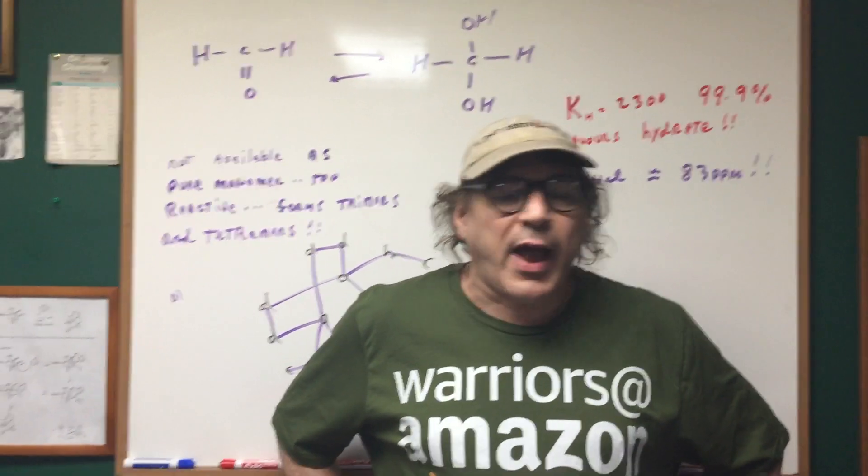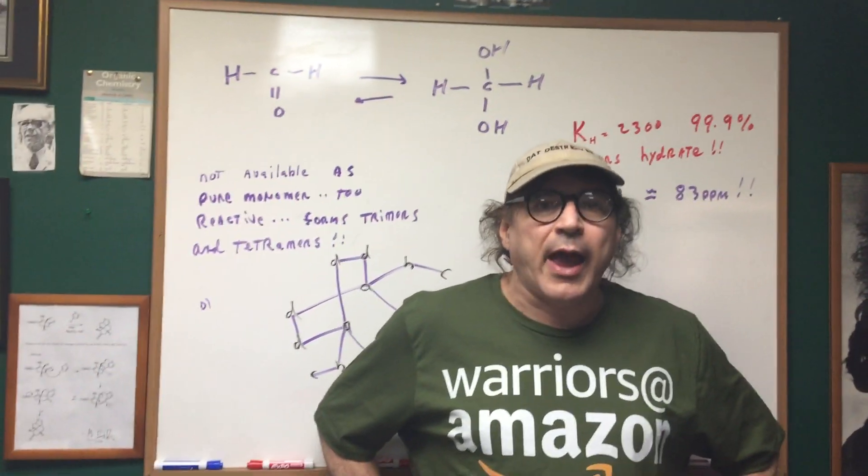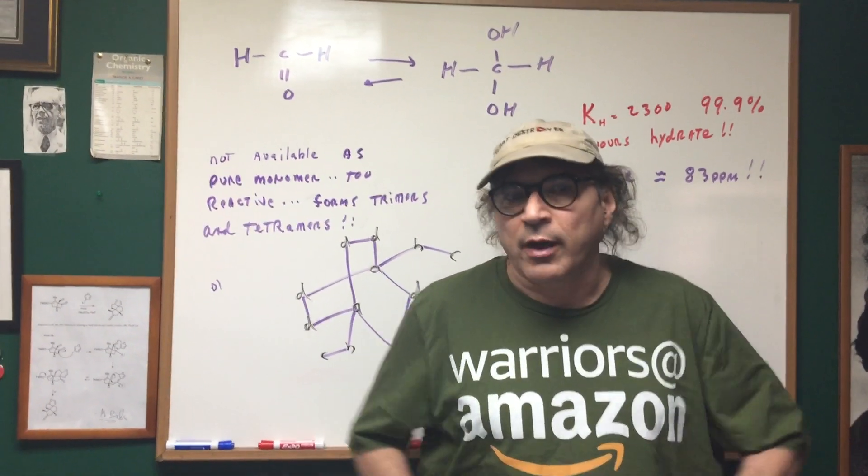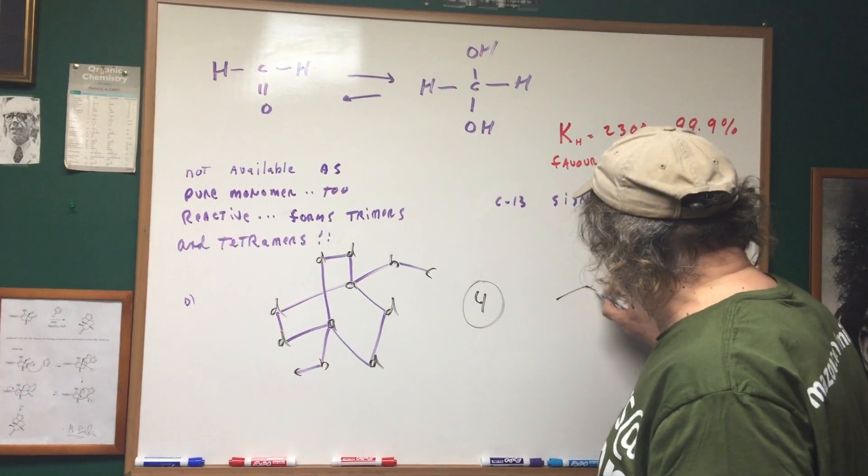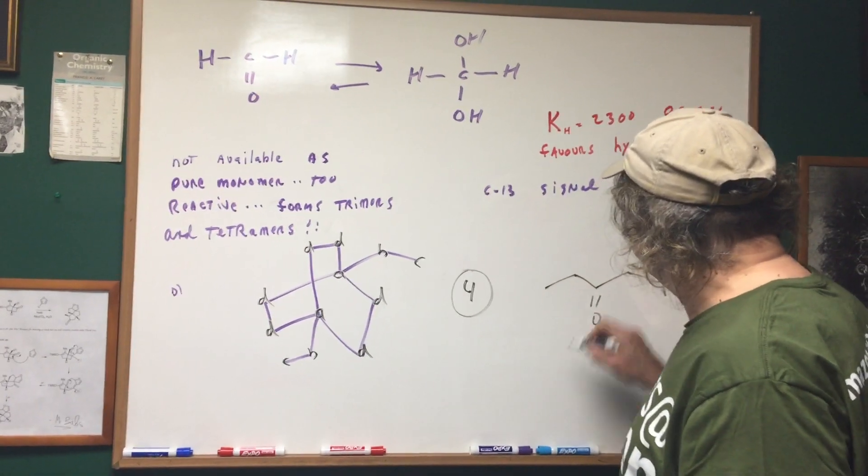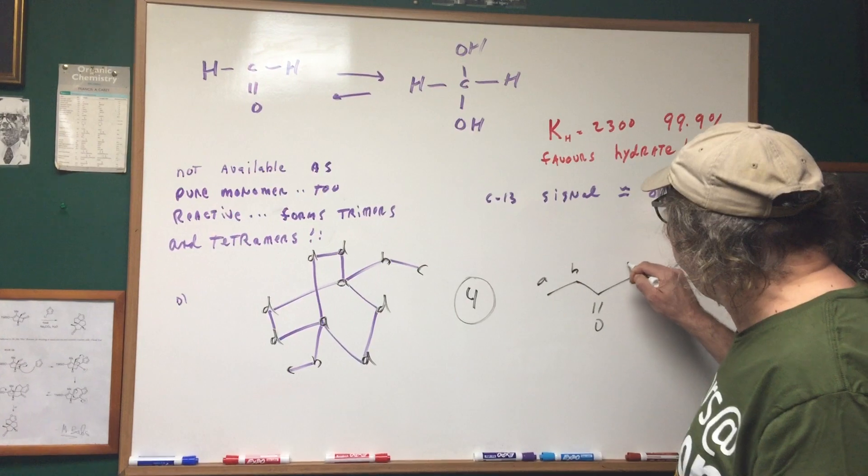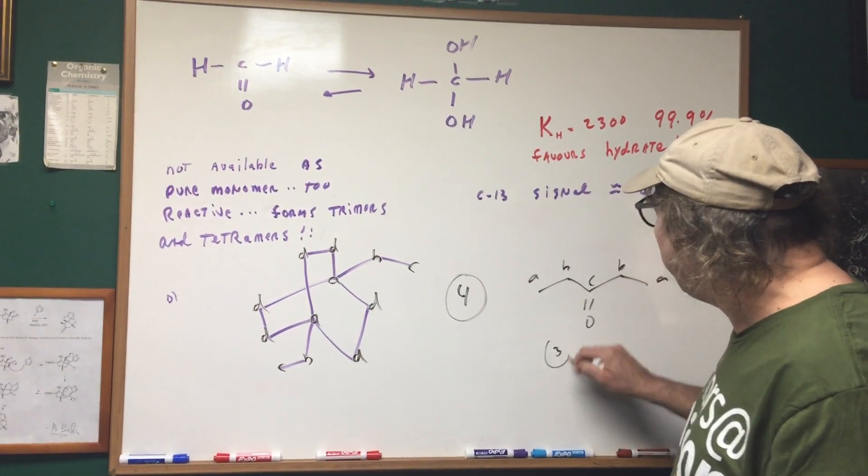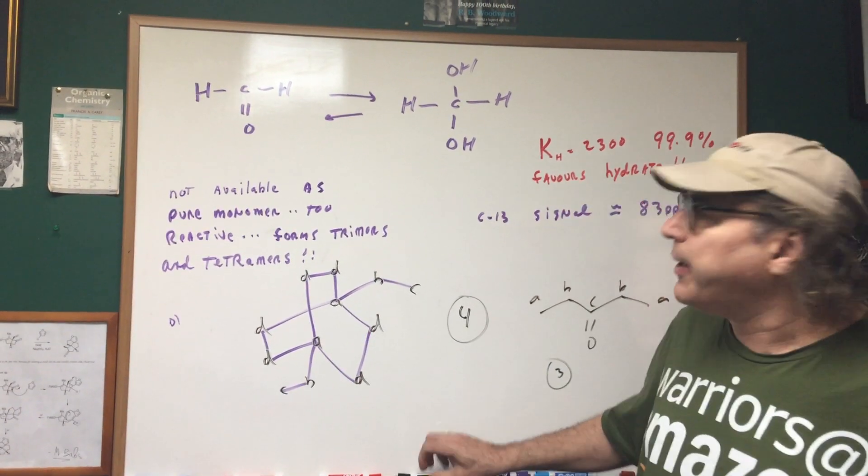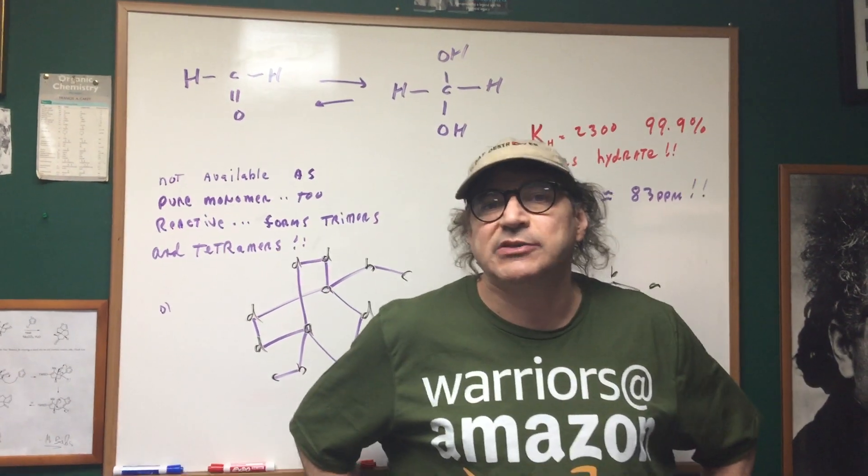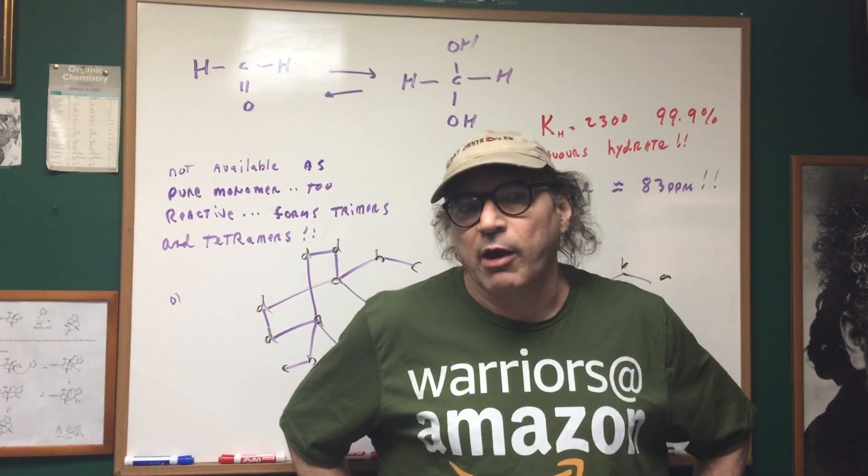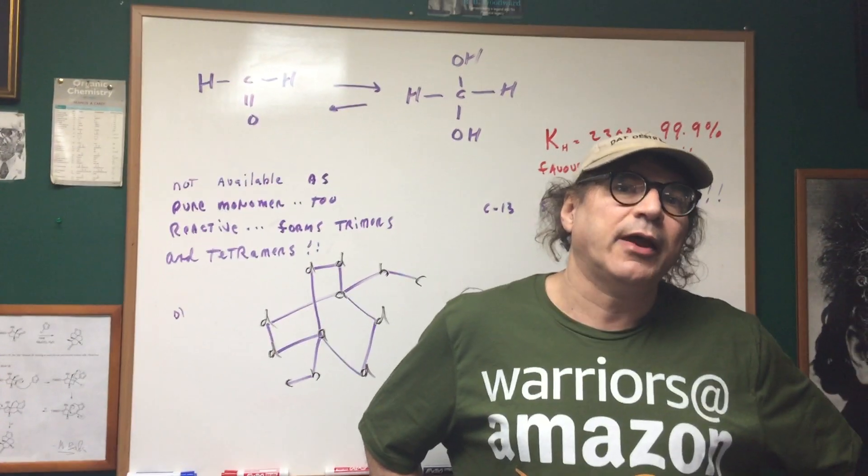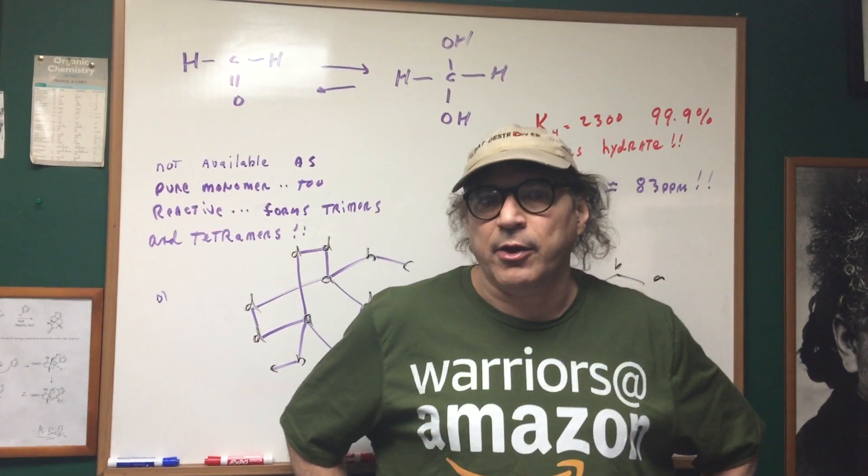But what would happen if you had five carbons and it was a three pentanone such as this. If it was a three pentanone as you can see you would have symmetry and therefore you would have only three signals. So you got to be careful of symmetry. You understand this clip? You are good to go. All right I hope this helps. You got any further questions hit me up in study group. Good day to you.